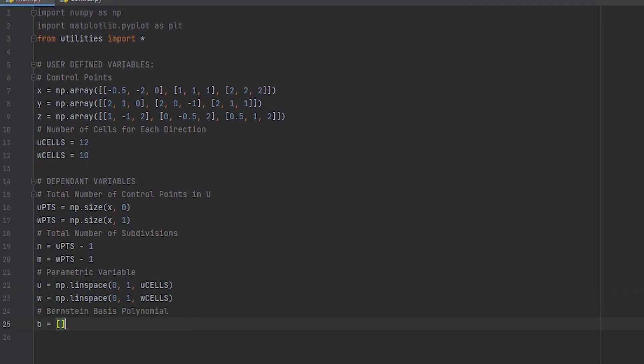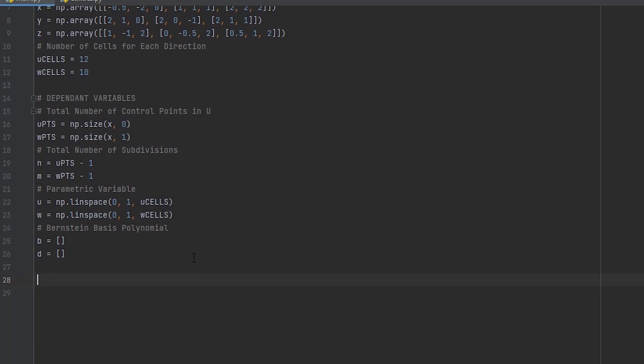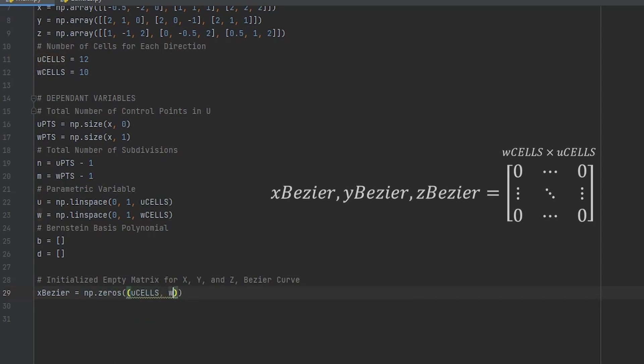These next two, you don't have to include them in your code, but I want to show you the plots for the Bernstein polynomials and I will store them inside these two empty arrays. Again, you don't have to do this. Lastly, let's create three arrays filled with zeros for the final matrices of the Bezier surface. Their size will be dependent on the tuple we choose and in our case, it will be U cells for rows and W cells for columns.